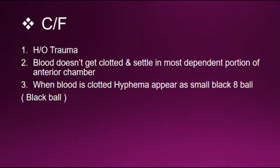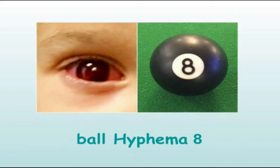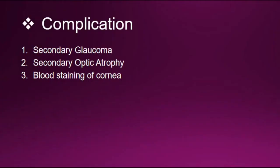Clinical features of hyphema: there will be a history of trauma. Blood does not clot and settles in the most dependent portion of the anterior chamber. But when blood is clotted, hyphema appears as a small black eight ball, which is also called black ball hyphema. Here you can see a picture of the black eight ball.